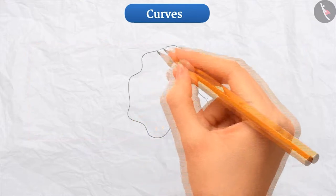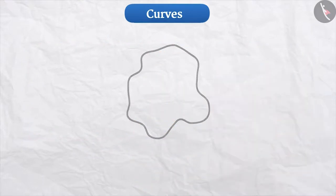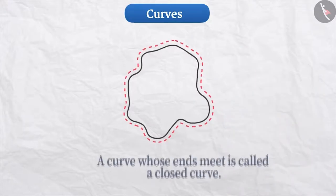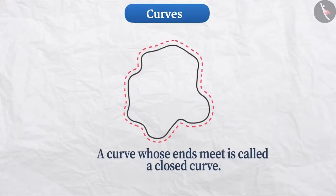Some curves start from a place and end in the same place. That means it doesn't have an initial point or a final point, which means that their ends are joined. Such curves whose ends are joined are called closed curves. Just like the curves shown here.